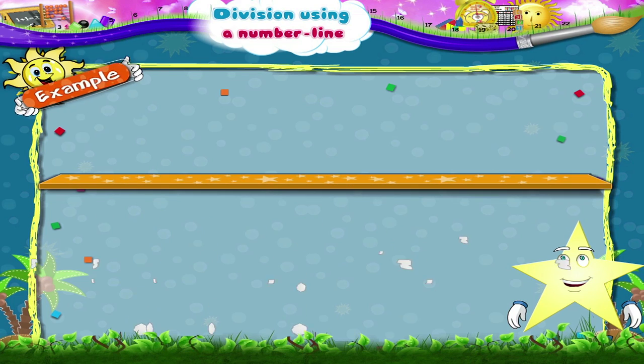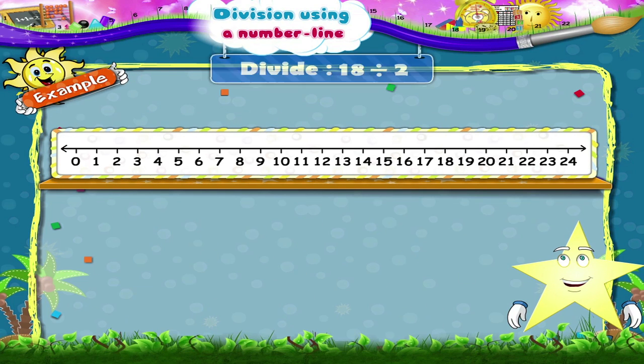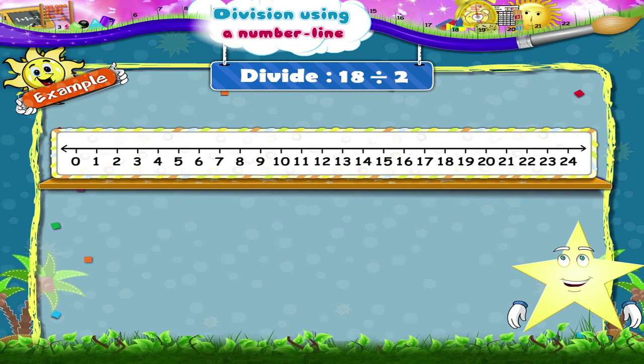Here is the last example Starry. Divide 18 by 2. From which number should we start? Yes, 18.